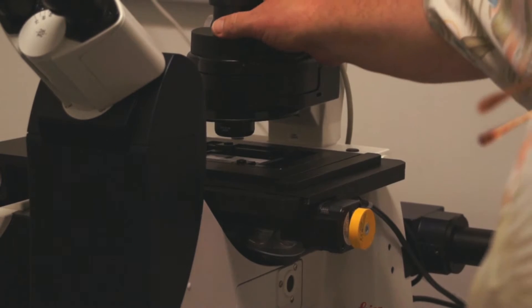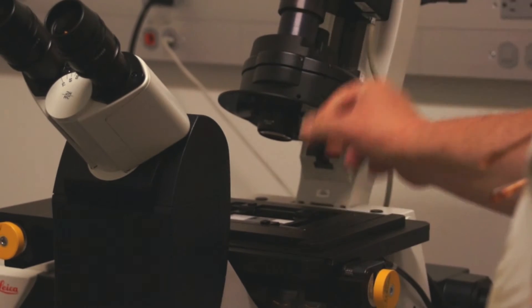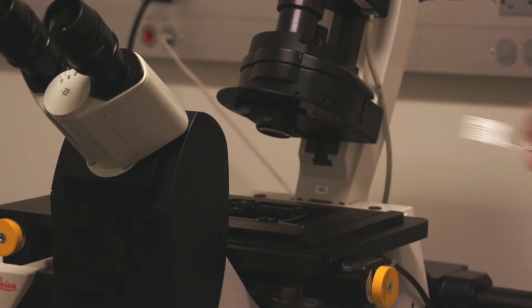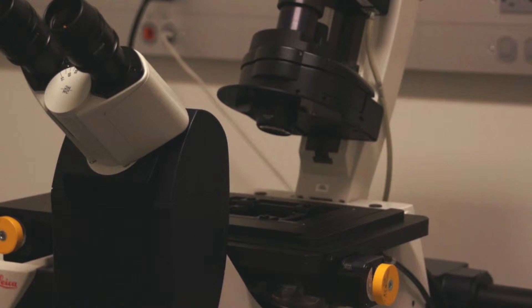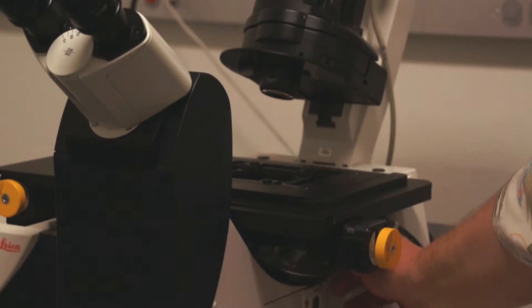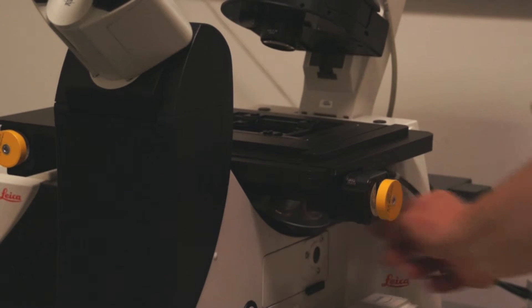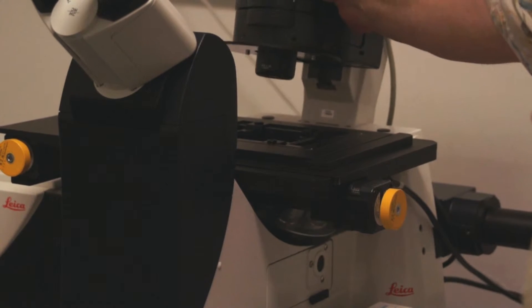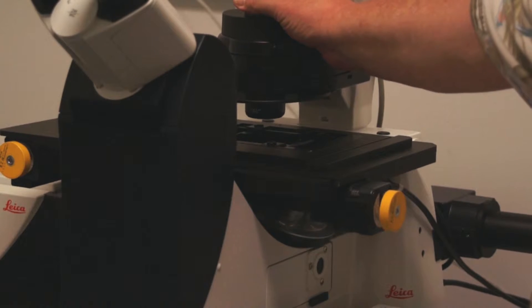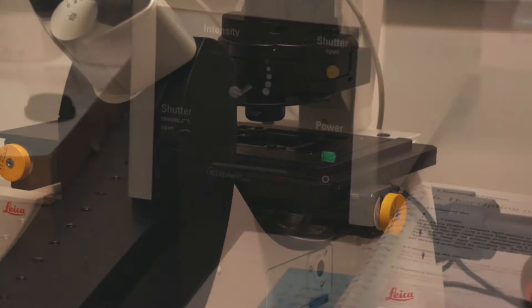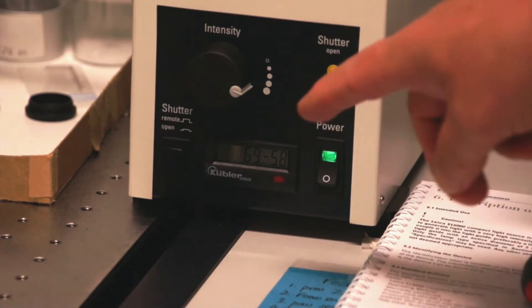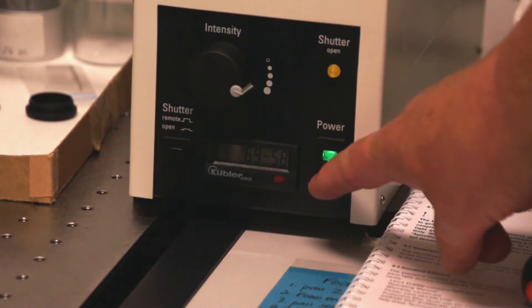We rock our illuminator out of the way, we take our slide off the stage, we dial our objective back down to the empty space, bring our illuminator back into place, and now we're ready to shut down the power buttons. Do not forget to turn the power off on the reflected light epi illuminator for the microscope.